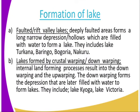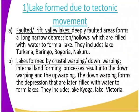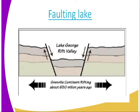The first type: fault lakes. These are formed by tectonic forces. Faulted areas form along narrow depressions — horsts — which are filled with water to form lakes. Examples include Lake Baringo, Lake Nakuru. Lakes formed by crustal warping — upwarping and downwarping — are internal land-forming processes. Downwarping forms depressions later filled with water. Examples include Lake Kyoga and Lake Victoria. Lake George is also an example found in the rift valley.